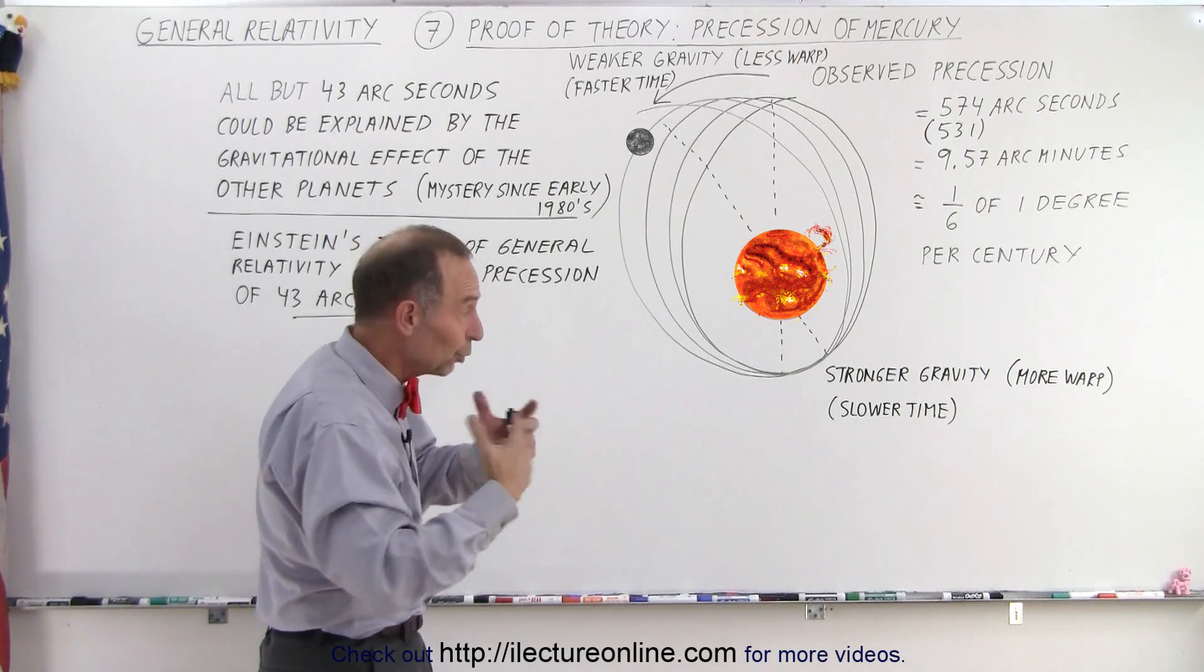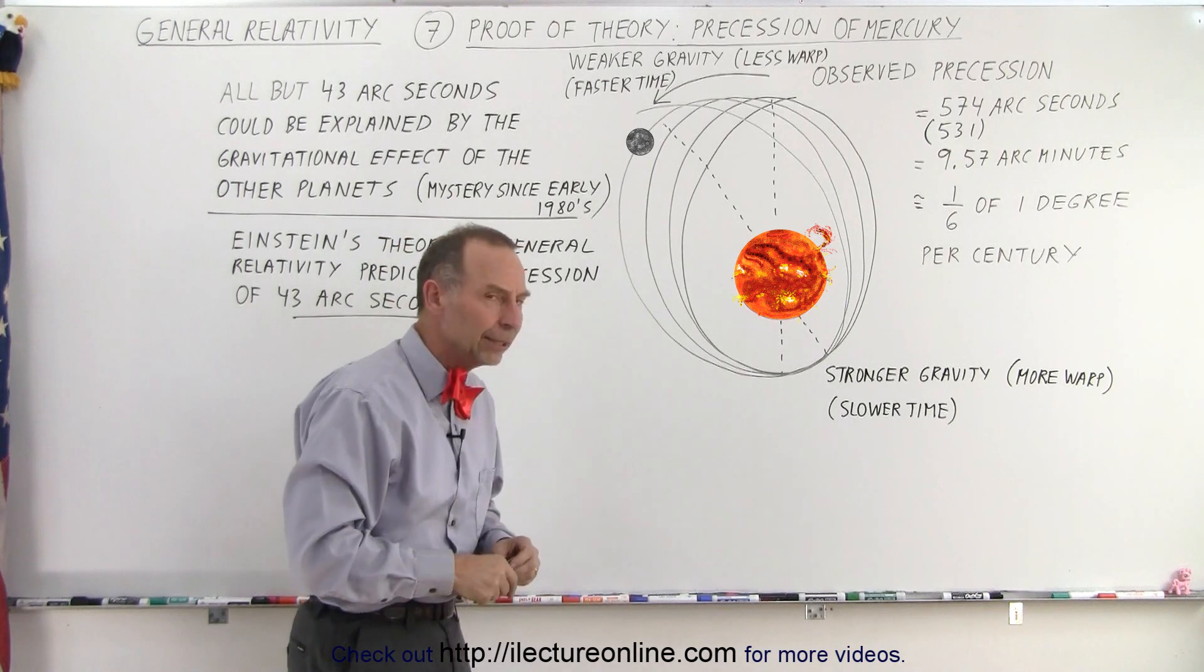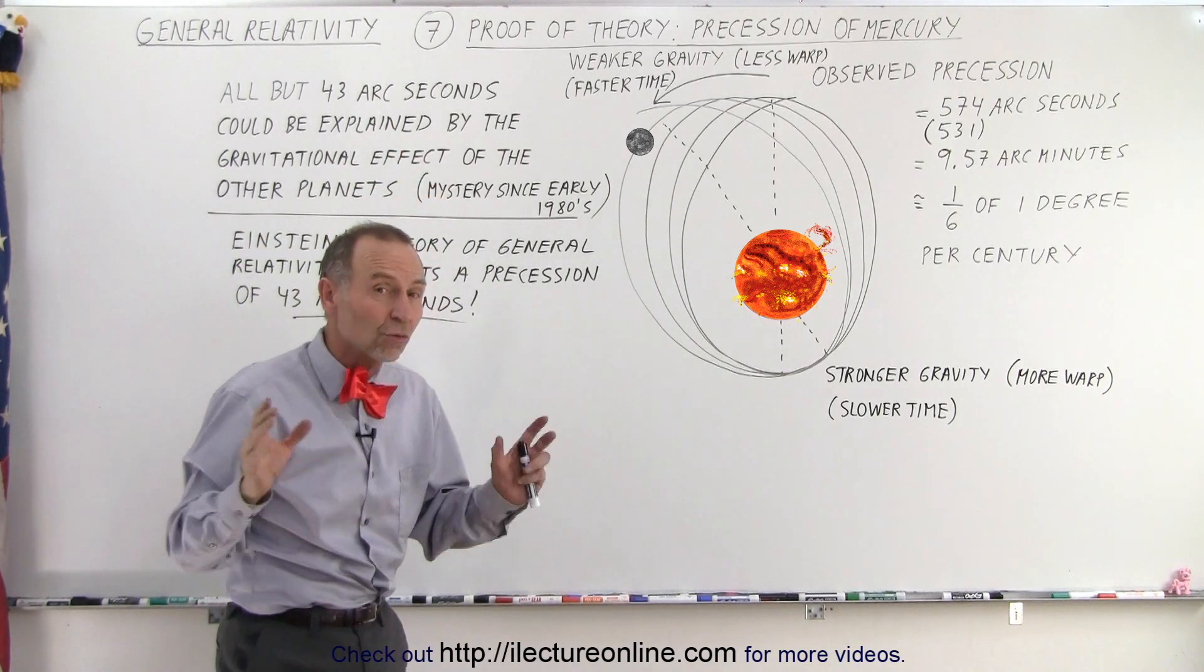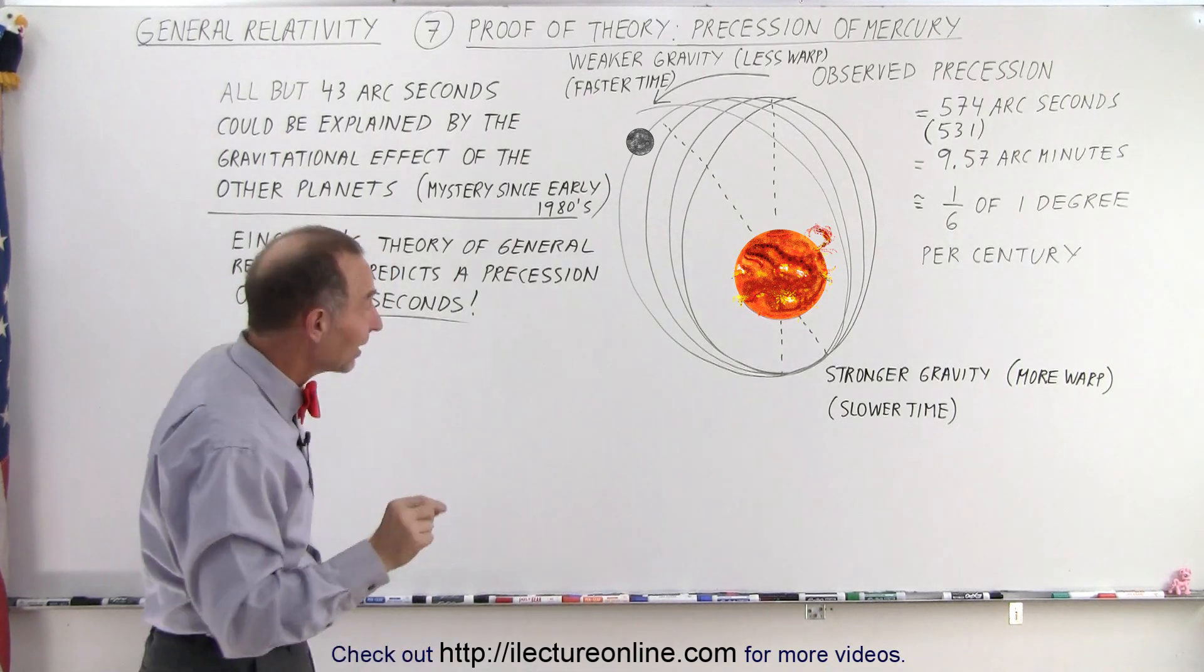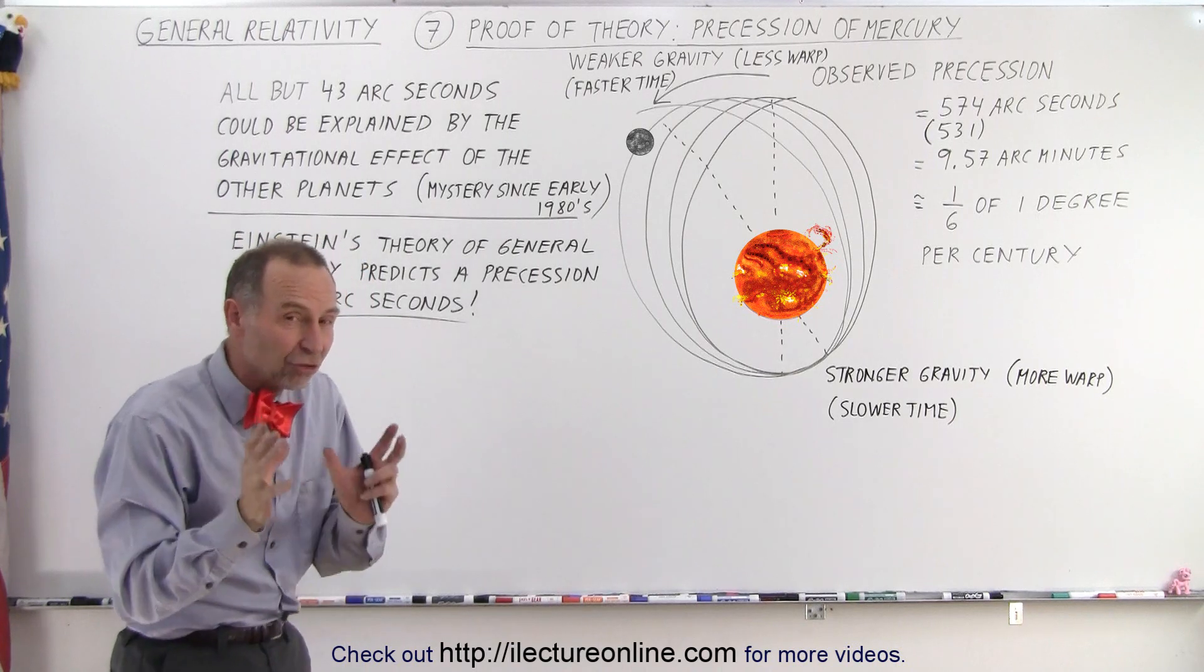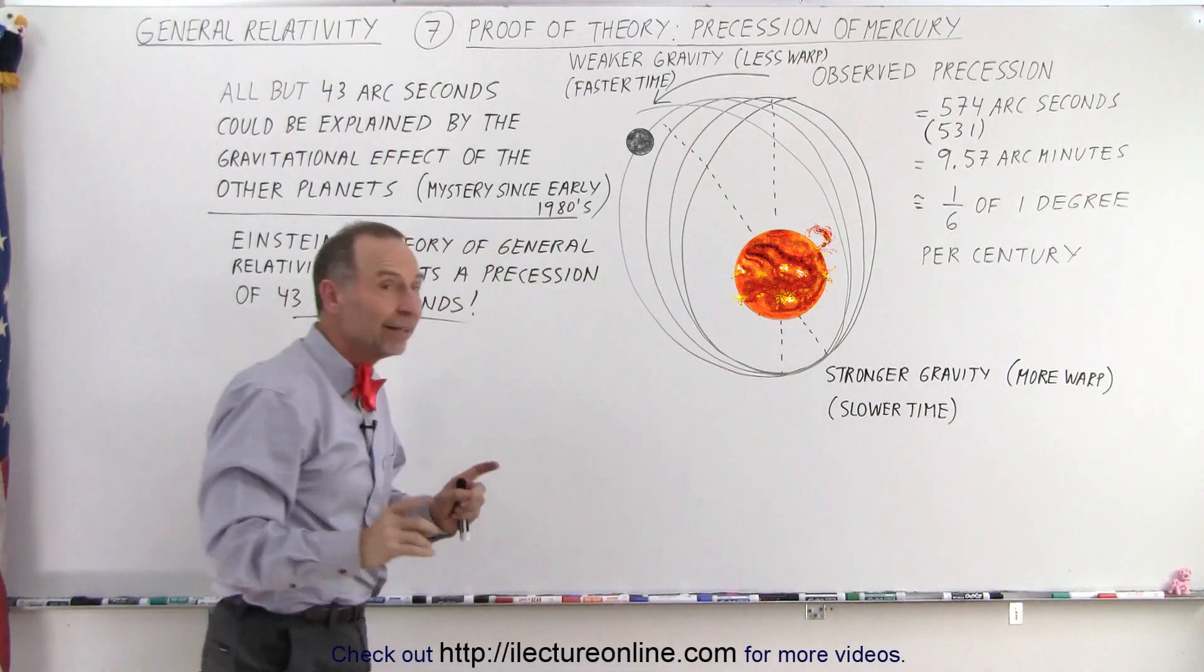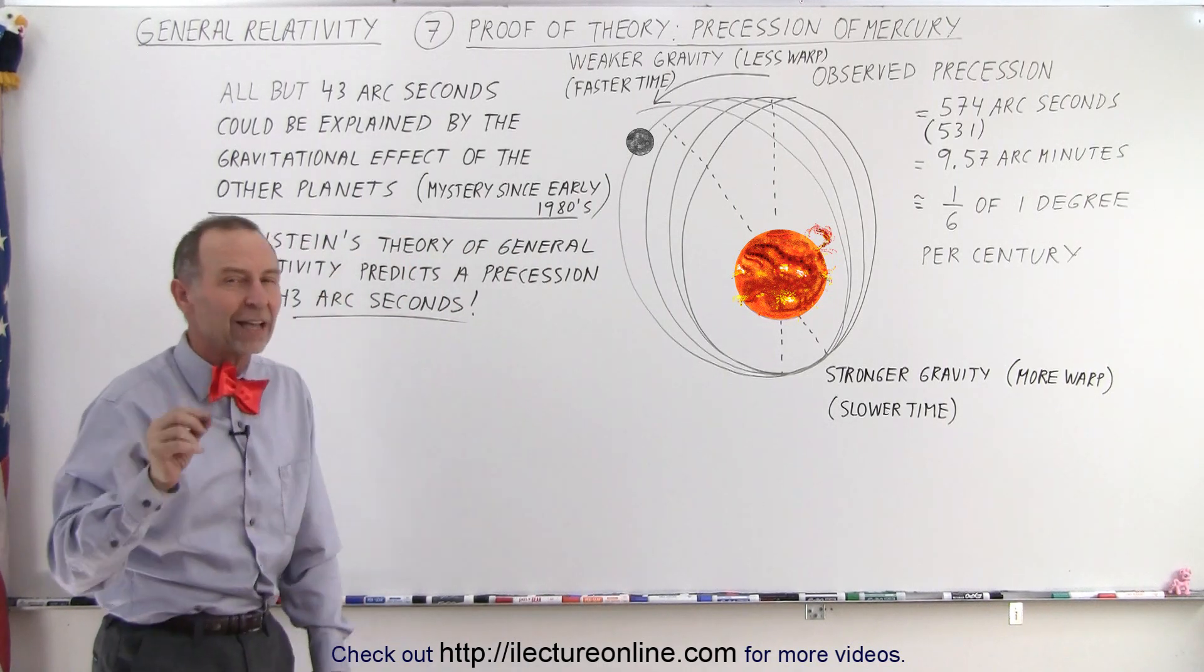Later on, we'll do a video showing through the equation how that was calculated. But this was measured, calculated, and understood that there was this strange discrepancy no one could explain. When Einstein came around with the general theory of relativity and they started calculating how much effect that change in time would be when the planet is closer and far away from the Sun, they came up with a calculation that showed it would make a difference of exactly, very close to 43 arc seconds.